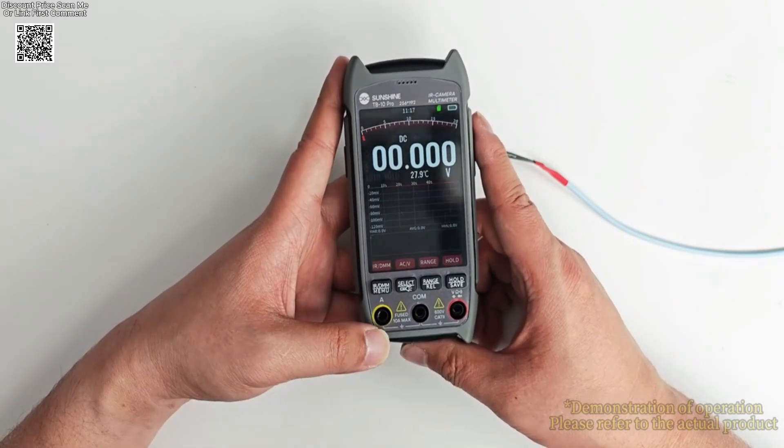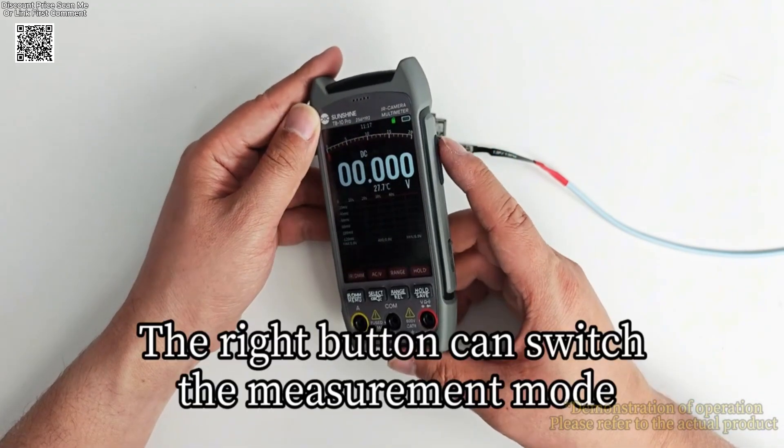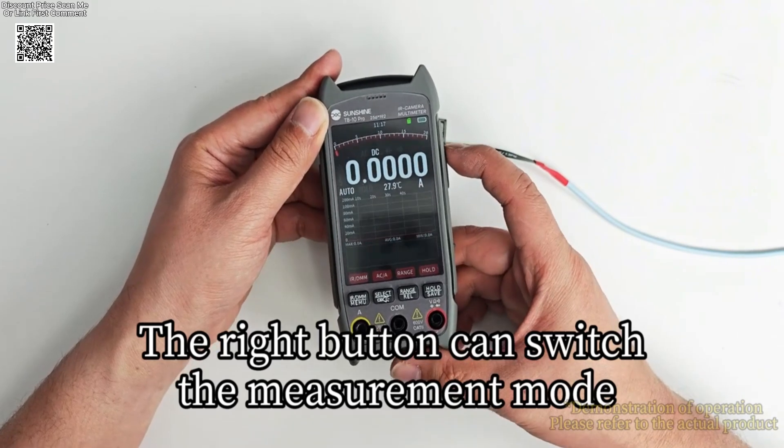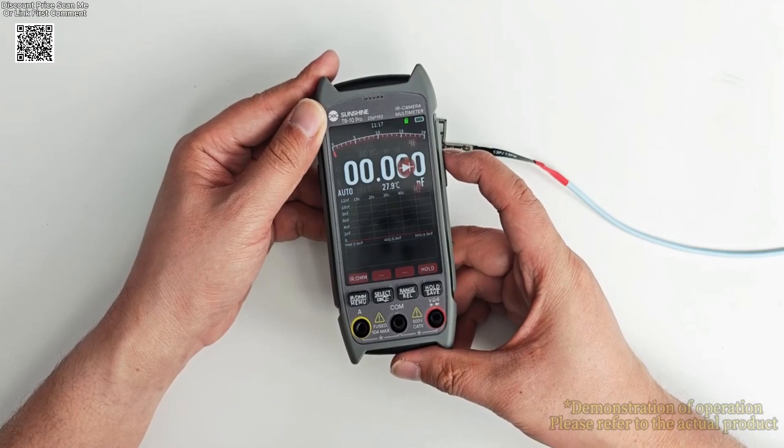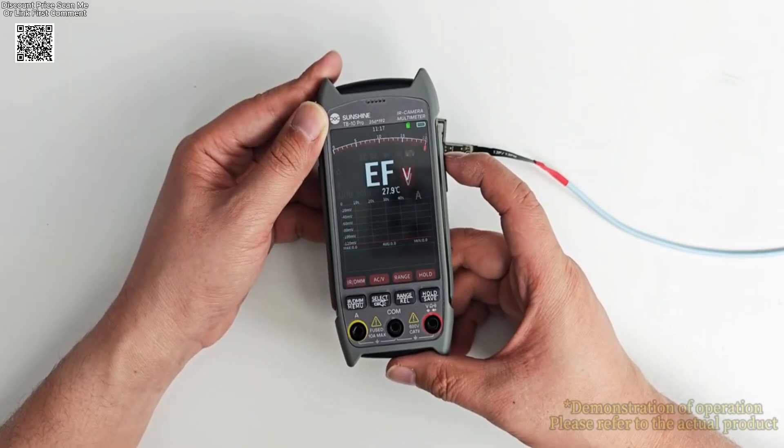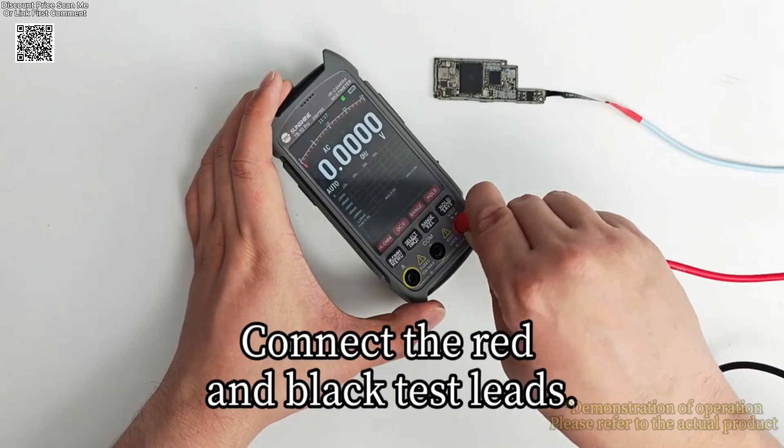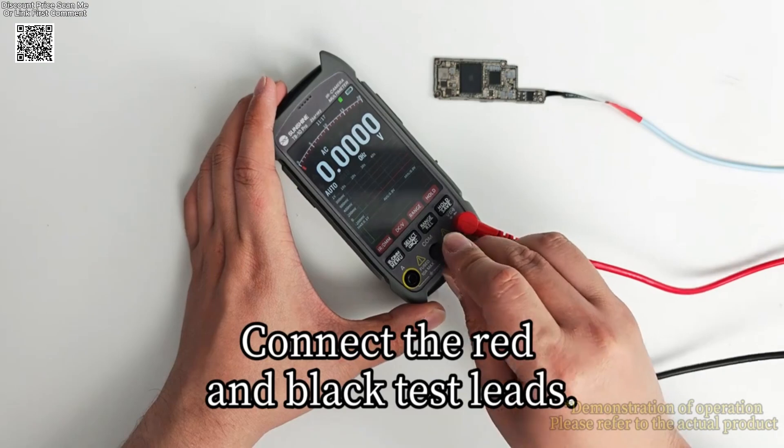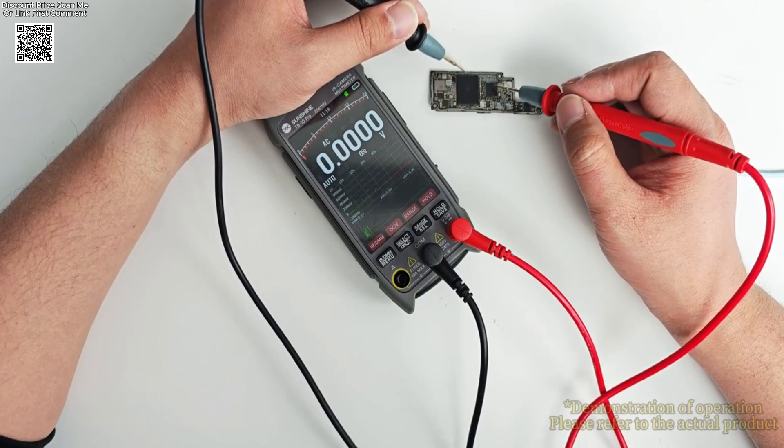Its 3.5-inch display with 320 x 480 resolution delivers clear visuals, while the Type-C USB interface ensures fast data transfer. The device supports TF cards up to 64GB, providing ample space for storing images in BMP format. With a removable 18650 lithium battery, it is both convenient and long-lasting during extended use.